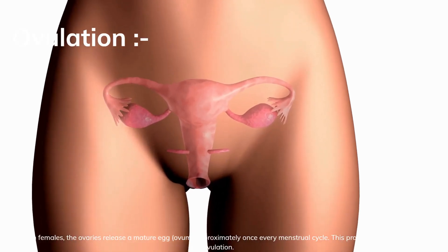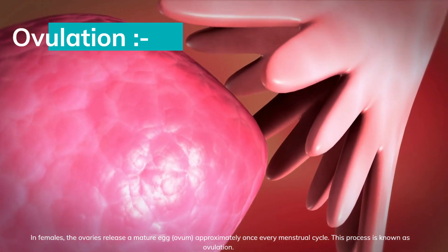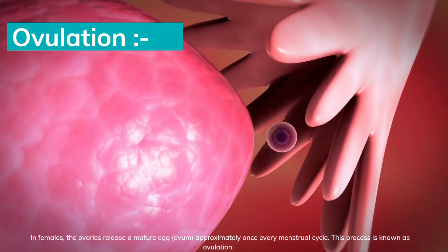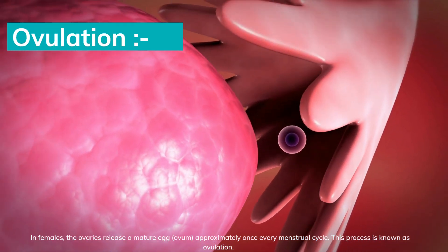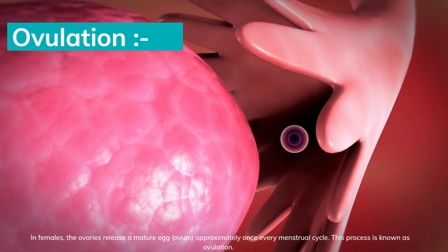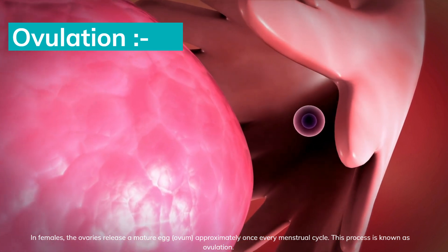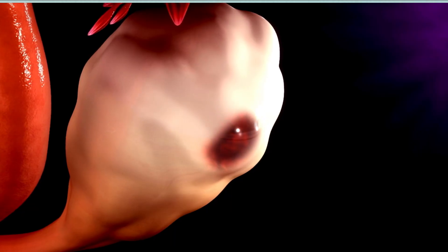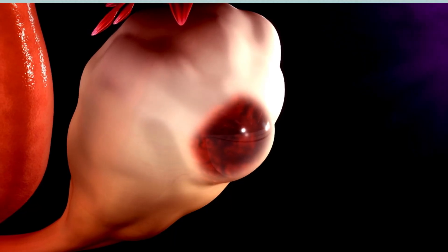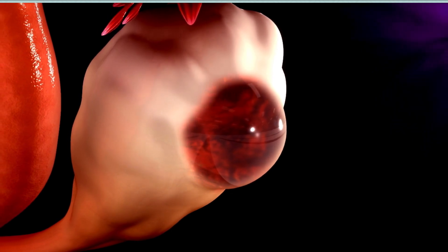In females, the ovaries release a mature egg (ovum) approximately once every menstrual cycle. This process is known as ovulation. The egg is released into the fallopian tube, where it awaits fertilization.